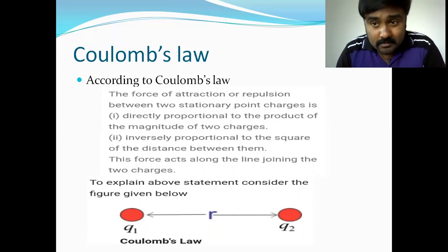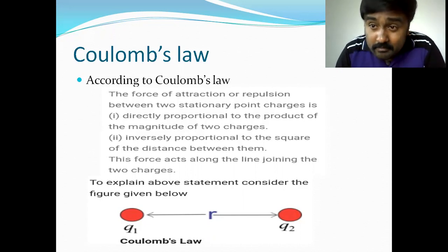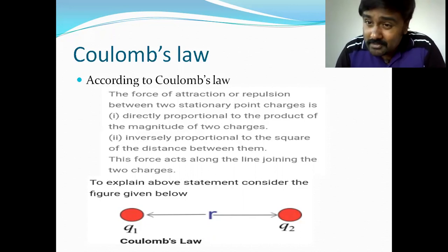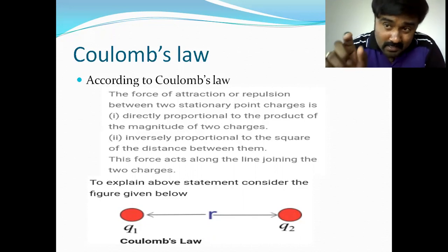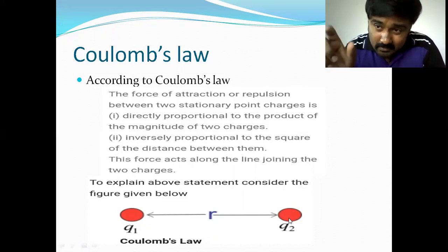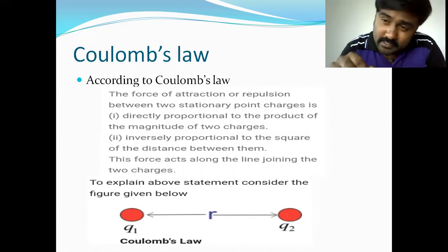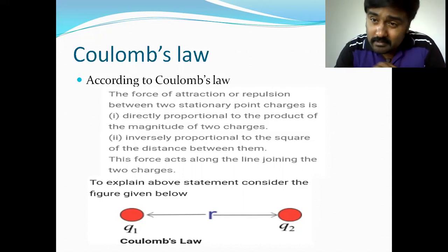According to Coulomb's inverse square law, the magnitude of force of attraction or repulsion between two point charges at rest is directly proportional to the product of magnitude of two point charges and inversely proportional to the square of the distance. Coulomb's force always acts along the line joining the two point charges. It may be attractive or repulsive — that depends on the nature of the point charges. If they are like charges, repulsion takes place; if they are unlike charges, attraction takes place.